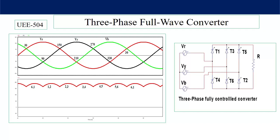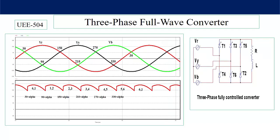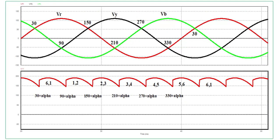With an RL load, the firing angle is shifted by angle alpha, so the conduction periods of the thyristor pairs are also shifted by alpha. Thyristors 6 and 1 will conduct from 30+α to 90+α, and likewise the cycle continues, giving six output voltage pulses across resistance R.